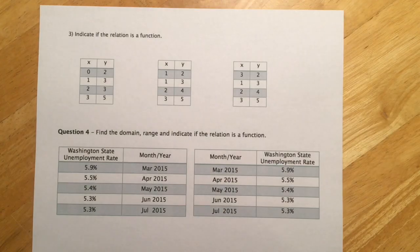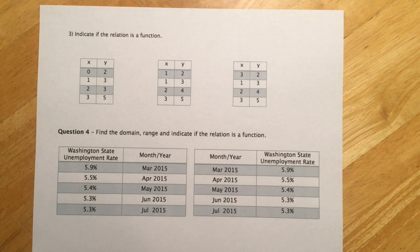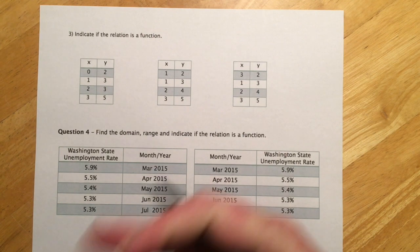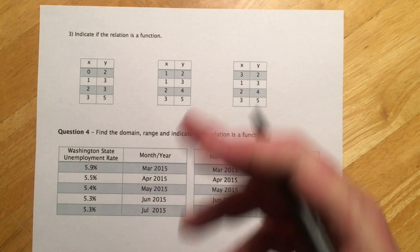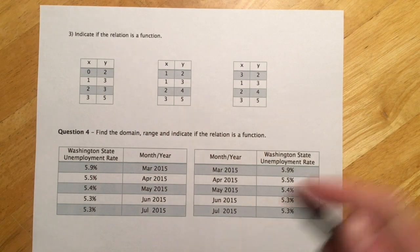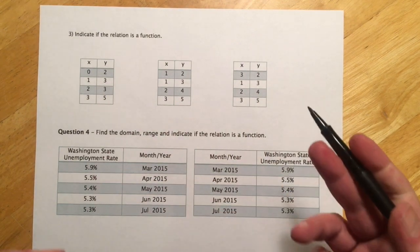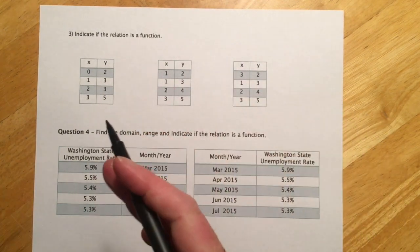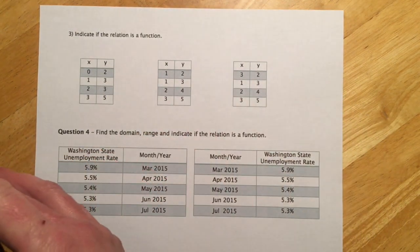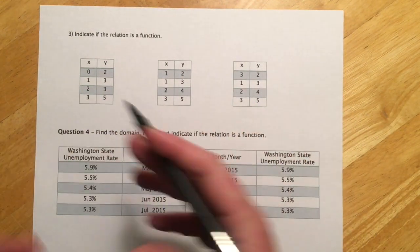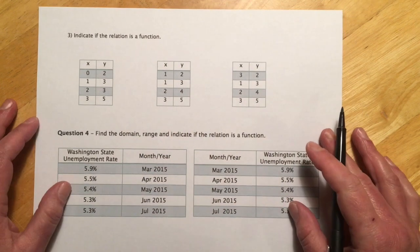So these next few examples involve functions and what functions are. At the end we're going to pick up functions and domain and range, and we're going to state domain and range in terms of interval notation. That's why we're seeing that in this section.